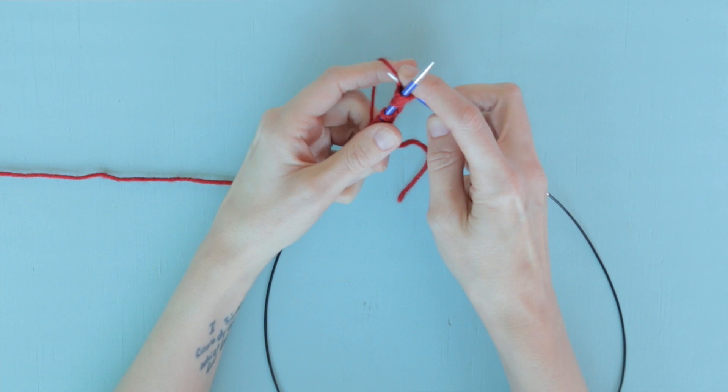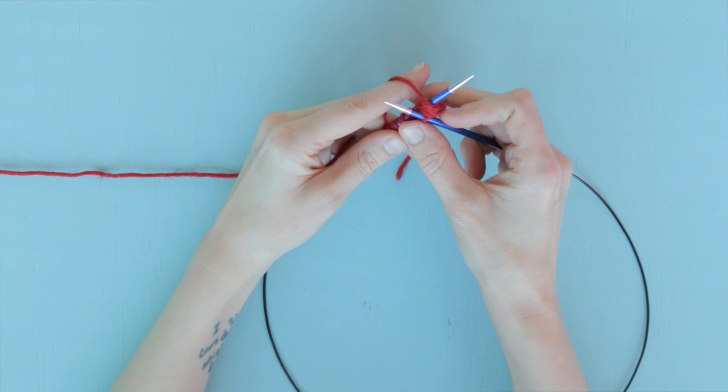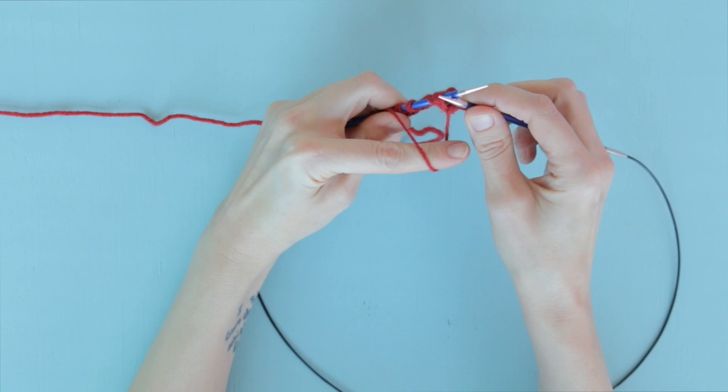Then we're going to bring the working yarn between both needles to the front, and now we can pull that working yarn down. And that lets us insert the right hand needle purlwise into those same four loops. Wrap the yarn and draw it through.